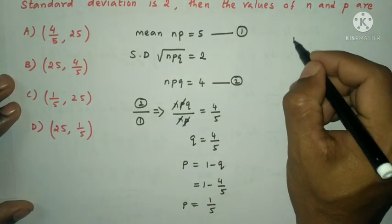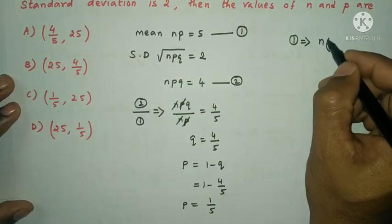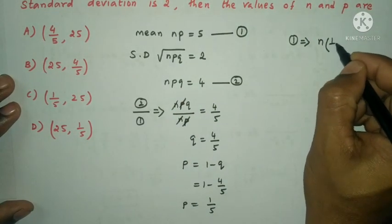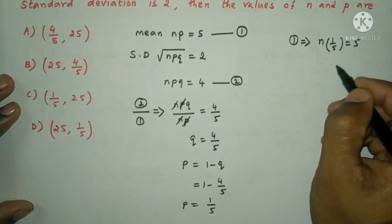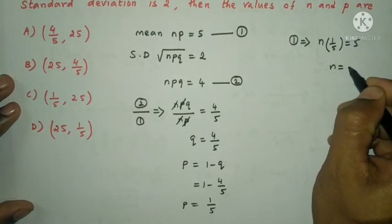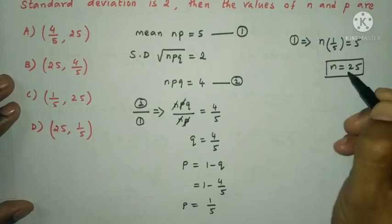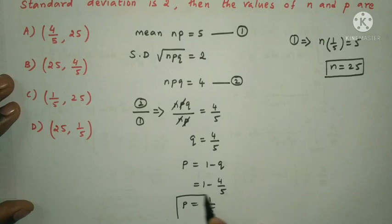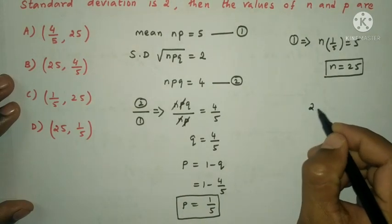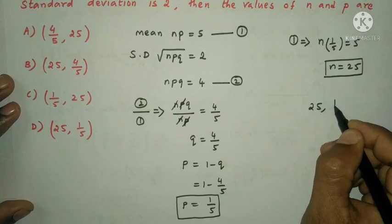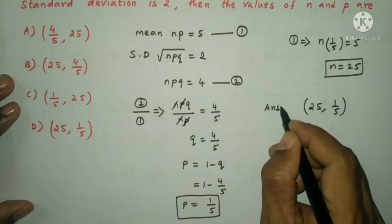Substituting P into equation 1: N·(1/5) = 5, so N = 5×5 = 25. Therefore N = 25 and P = 1/5. The answer is option D.